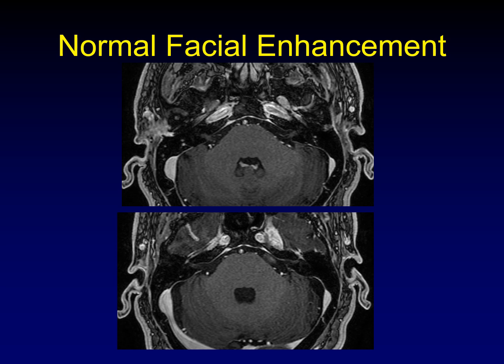You've got to know normal patterns of facial enhancement. Enhancement in the geniculate ganglion on both sides is absolutely normal, as is enhancement in the vertical segment of the facial nerve. Don't be fooled by normal facial enhancement. Symmetry is helpful, but you should understand the range of normal — where enhancement is more or less likely, and where it is not allowed, such as in the cisternal segments or in the internal auditory canal.